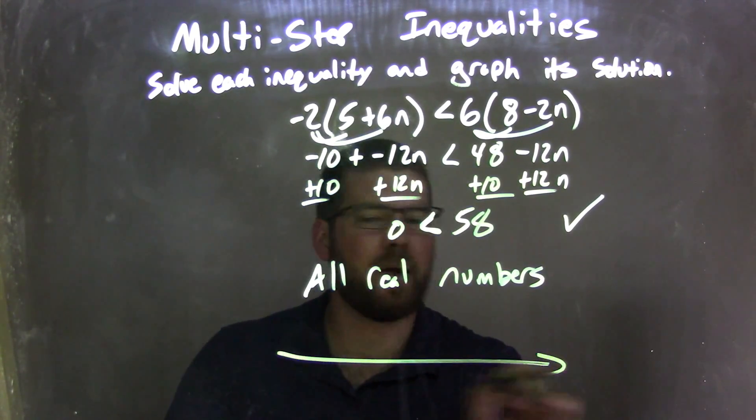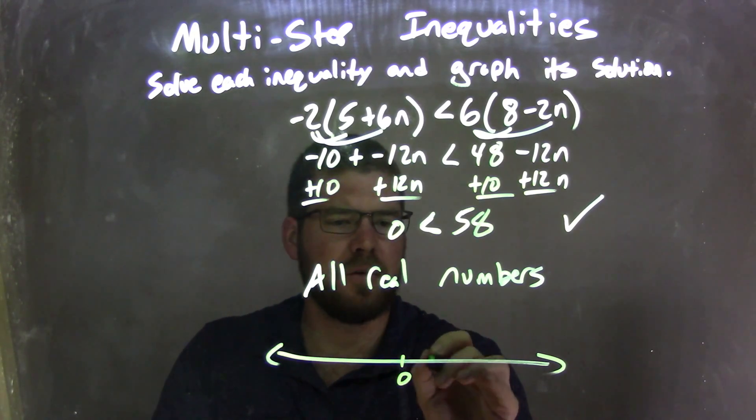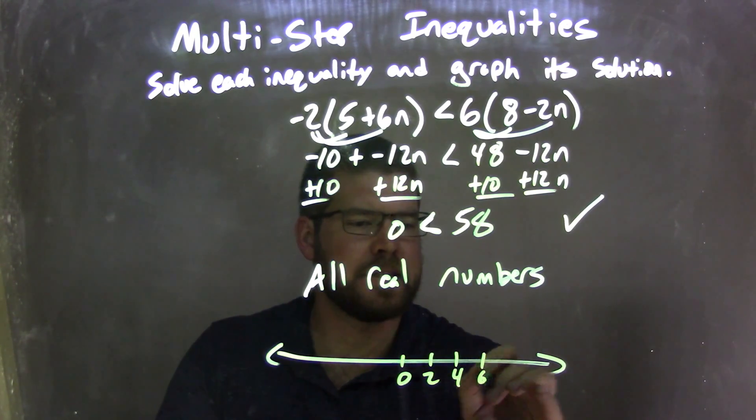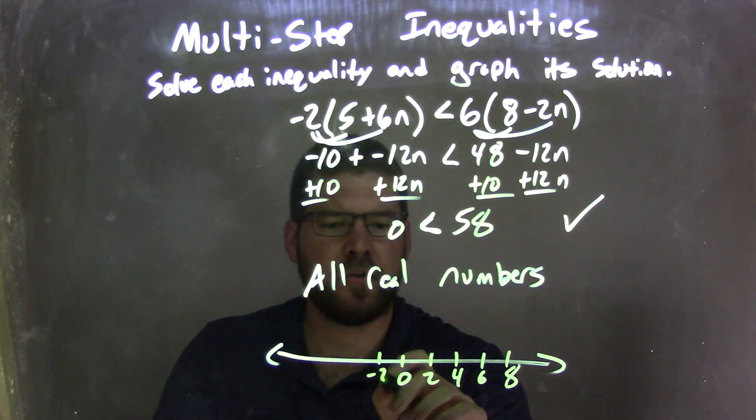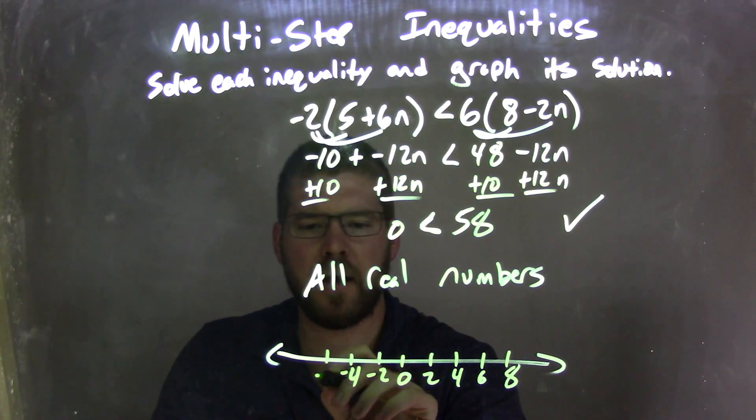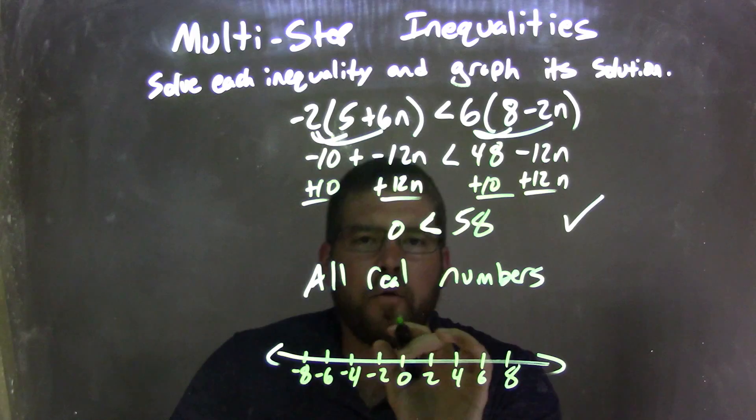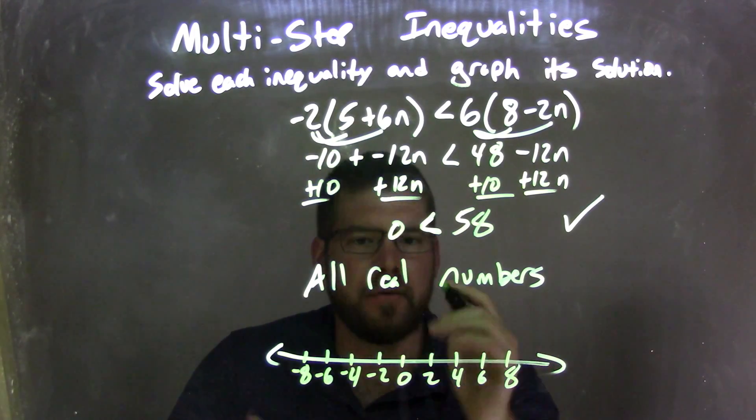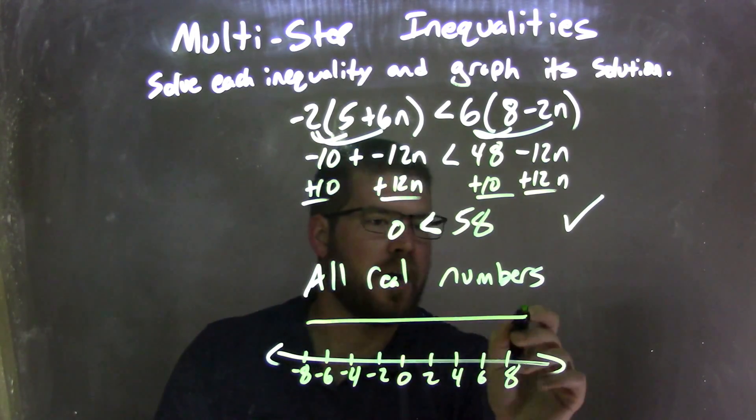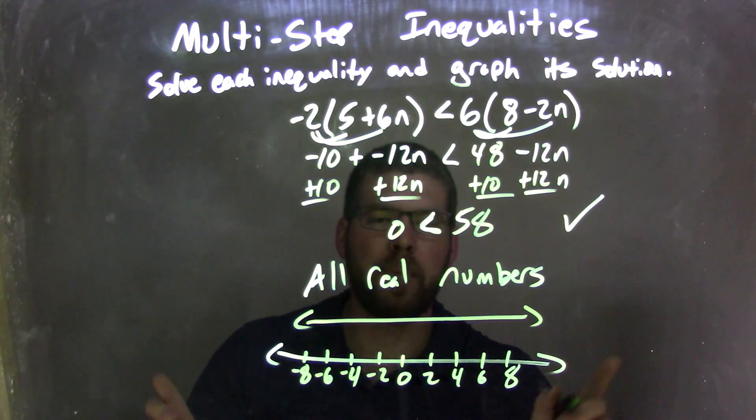So now I need to graph that. How do I graph that? So 2, 4, 6, 8, and appreciate negative 2, negative 4, negative 6, negative 8. All real numbers, when we graph it here, the way we show that is,